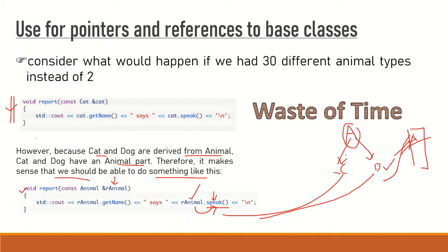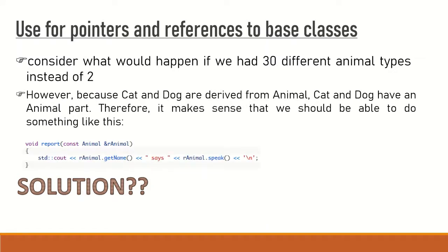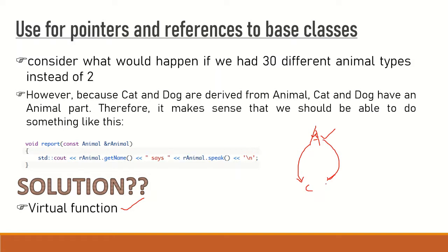Our agenda is: we can use a reference or pointer of the animal class, but because the speak method is redefined by the respective derived classes, we need to call that speak method from the derived class itself, not from the base class. The solution for this is called a virtual function. We declare the speak method as virtual inside the base class animal, and use the base class pointer or reference to call the function from the derived class — achieving runtime polymorphism.